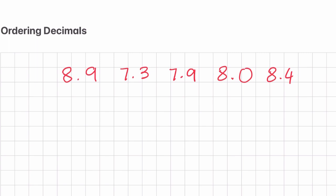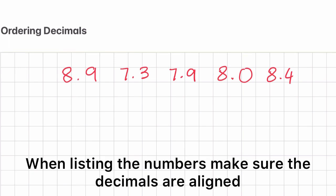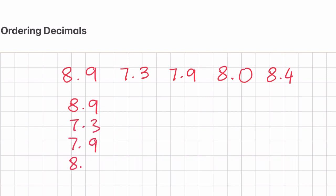So let's go ahead and list these numbers: 8.9, 7.3, 7.9, 8.0, and 8.4. Now we are going to compare the numbers from the left.